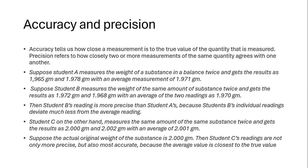Student C, on the other hand, measures the same amount of the same substance twice and gets the results as 2.000 gram and 2.002 gram with an average of 2.001 gram. Suppose the actual original weight of the substance is 2.000 gram — then student C's readings are not only precise but also most accurate, because the average value is closest to the true value.